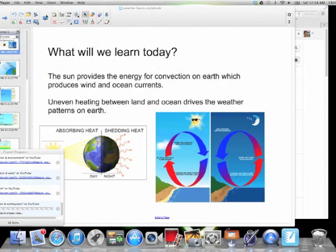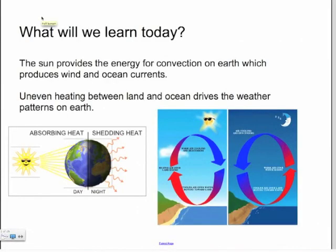All right, we're going to do try two because I couldn't talk the last time. So weather and its basics, we're going to look at the sun provides energy for convection currents, which we studied when we looked at the mantle and Earth's layers and how these convection currents produce wind and ocean currents for us and that the uneven heating between the land and the ocean drives every single weather pattern we have on our planet.